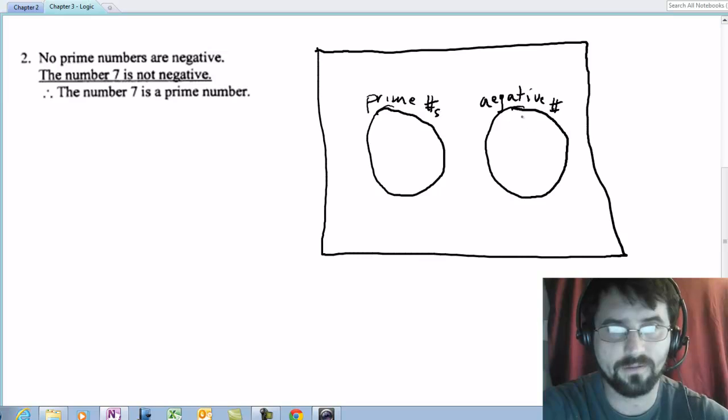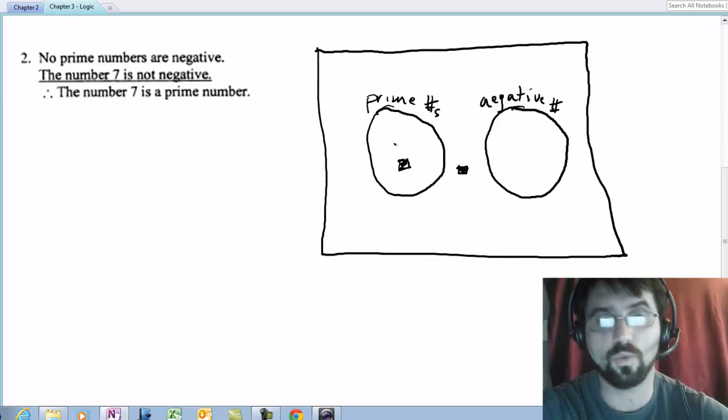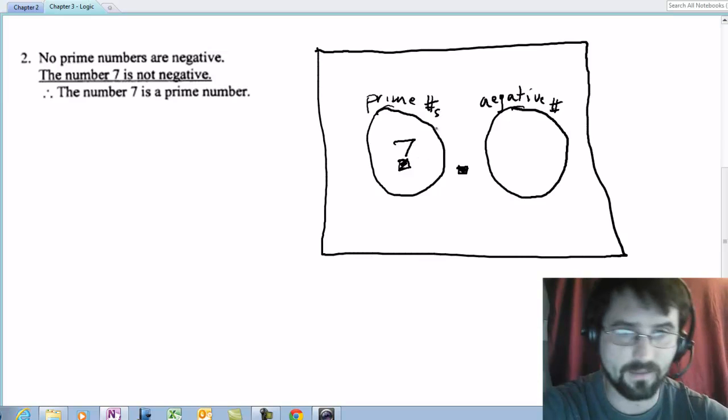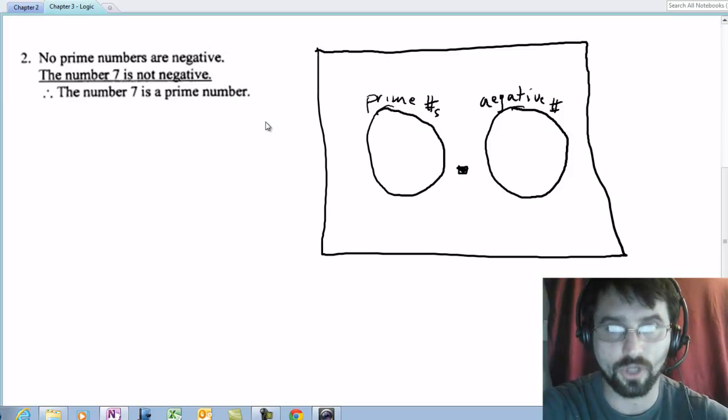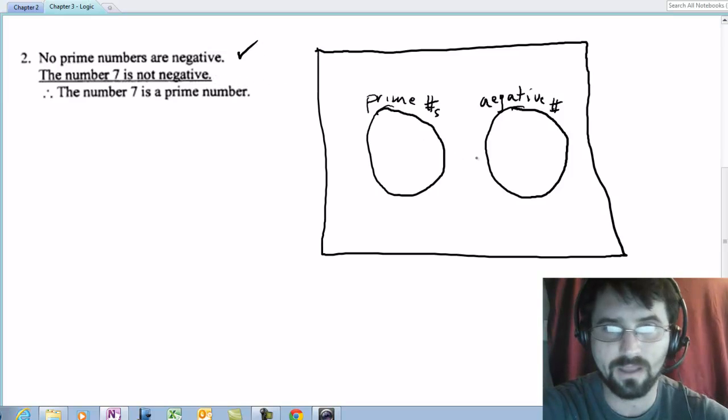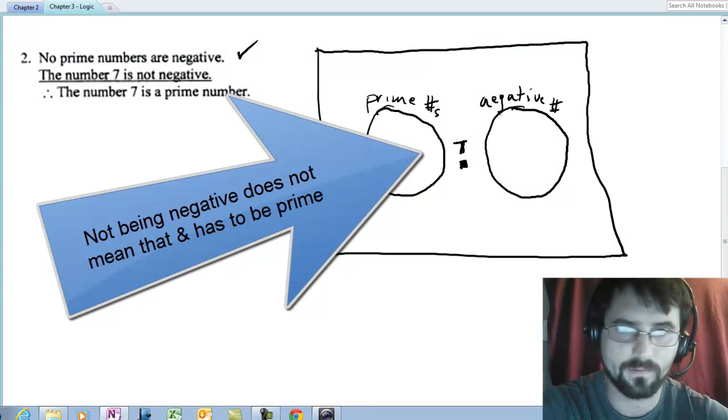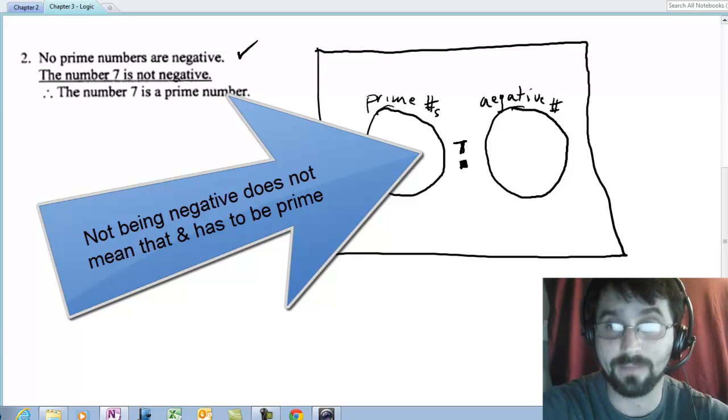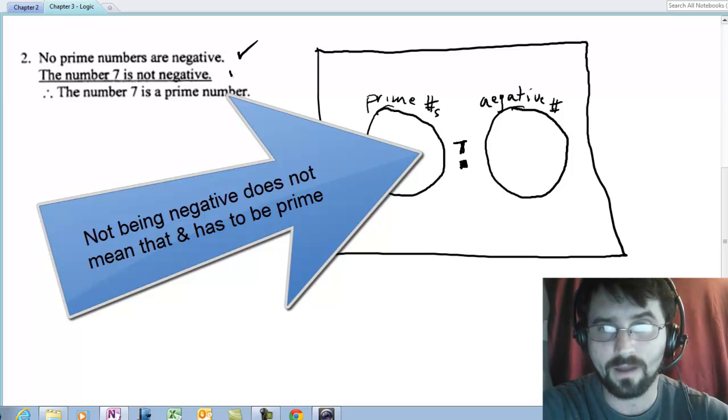The number seven is not negative. So if it's not negative, it could be here, it could be here. You and I both know that seven is a prime number. The tendency is to want to stick it here. But we're not examining where seven should go. We're examining where does it have to go based on the premises. And I'm going to put it out here.